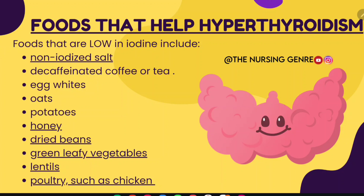Recommended foods for hyperthyroidism also include egg whites, oats, potatoes, honey, dried beans, green leafy vegetables, lentils, and poultry such as chicken. Decaffeinated coffee or tea is also recommended.